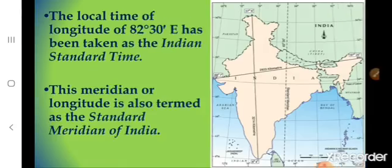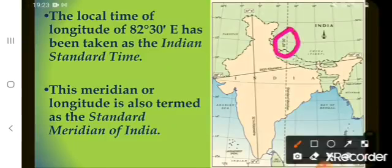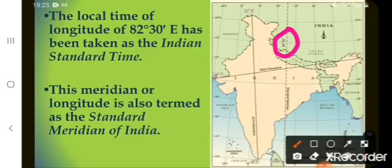As we have learnt, the local time changes by 4 minutes for every 1 degree of longitude, so the local time will be different in different places. Therefore, the local time of the longitude of 82 degrees 30 minutes east has been taken as the Indian Standard Time. This meridian or longitude is also termed as the standard meridian of India, so that the time in all places in our country would be the same.